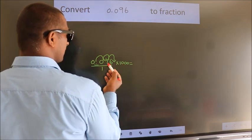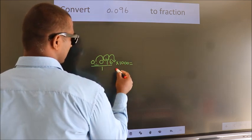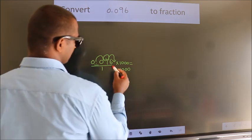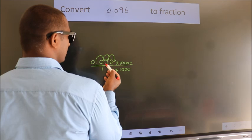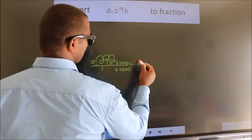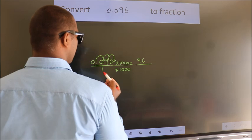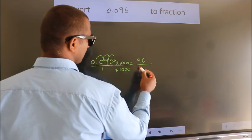Whatever we are multiplying in the numerator, in the denominator also we should do the same. Next, 0.096 into 1000, we get 96. In the denominator, 1 into 1000 is 1000.